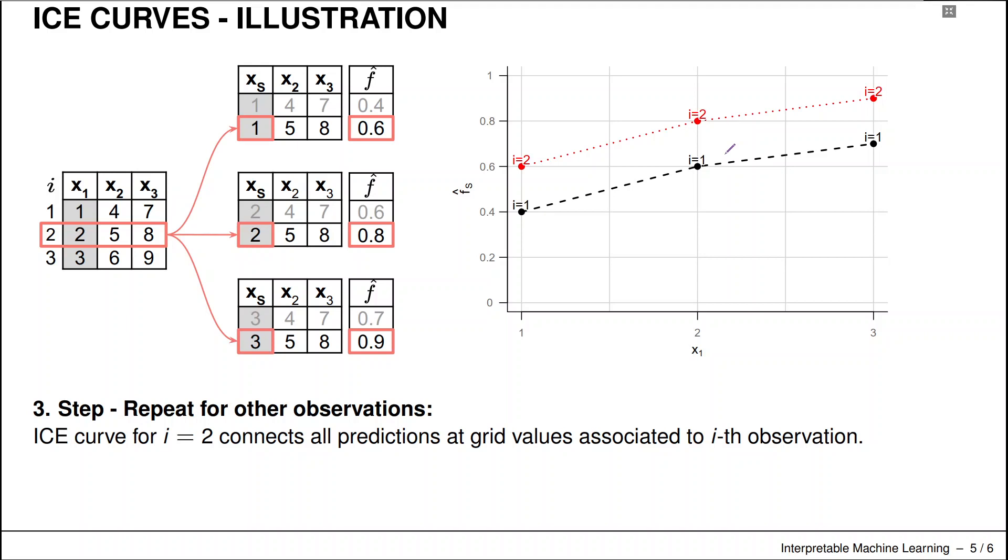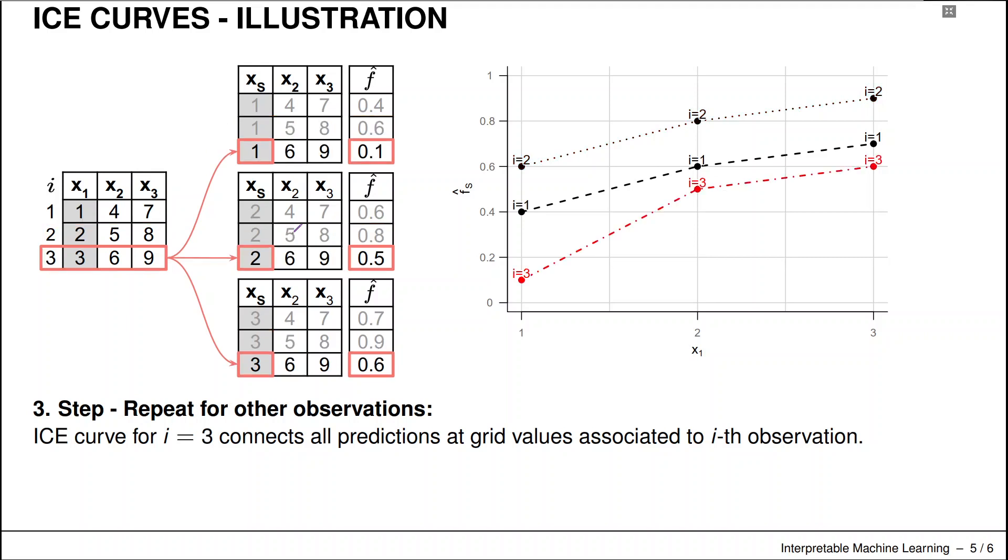We just plug in these grid values while everything else is fixed to the observed features in -S, so to speak, everything we are not looking at.